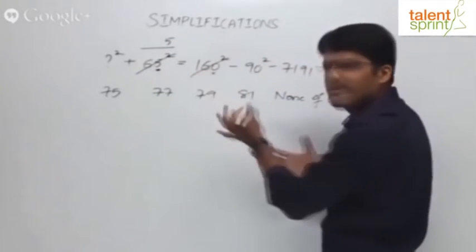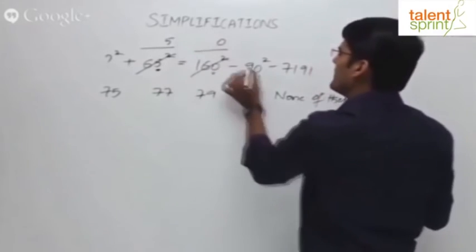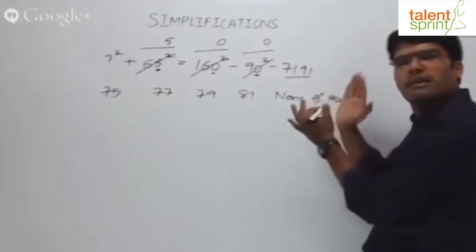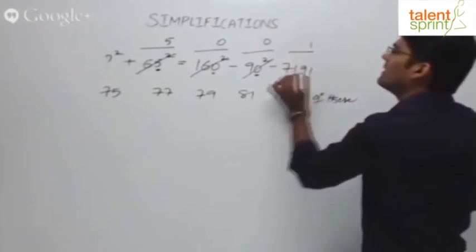When a number ends in 0, its square always ends in 0. So this number is going to end in 0. When a number ends in 0, its square always ends in 0. So this is going to end in 0. And this is a simple number, direct number there which ends in 1.